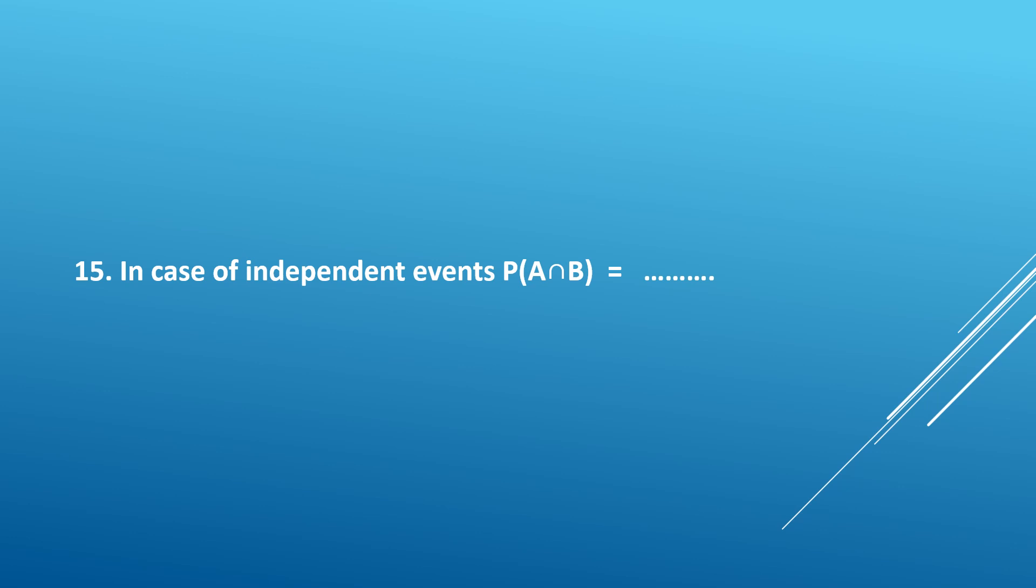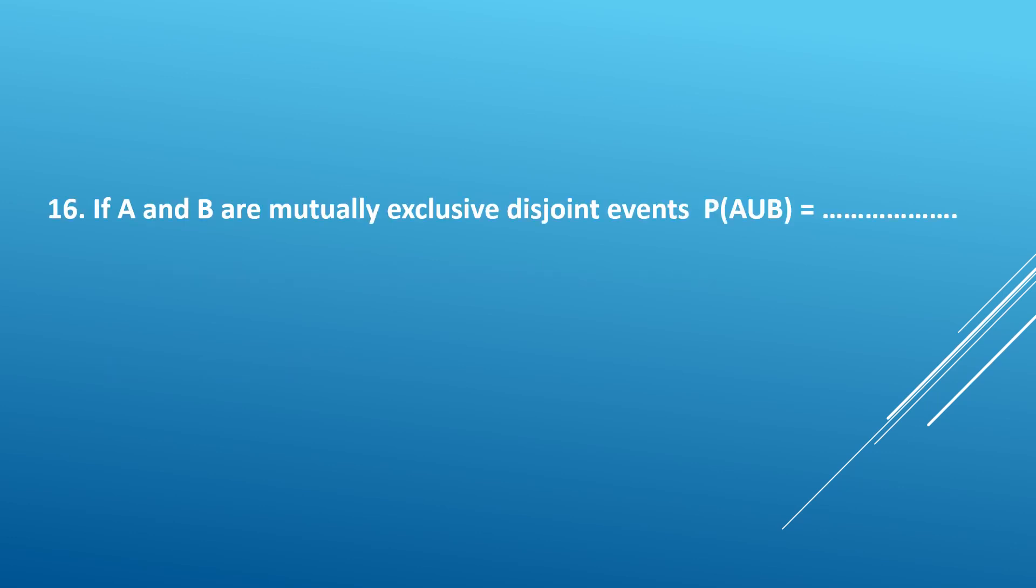Fifteenth question: In case of independent events, P of A intersection B. The answer is P of A into P of B. For independent events, we can write P of A intersection B is equal to P of A into P of B. Sixteenth question: If A and B are mutually exclusive disjoint events, then P of A union B is equal to dash. We write P of A union B is equal to P of A plus P of B.